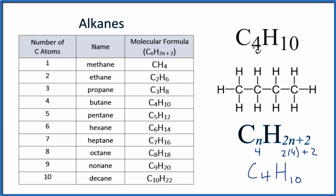If we had something like C6H10, it'd be C6H2 times six plus two, so that's twelve plus two is fourteen, C6H14, and that's called hexane.